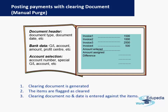Manual clearing — also called manual purge — involves posting payments with a clearing document. First, the clearing document is generated; second, the items are flagged as cleared; third, the clearing document number and date are entered against these items. Clearing is a very important part of the accounting team because when a sale is made and a payment is received, it is essential to know whether the customer account is completely cleared or if there is any outstanding balance, as the revenue of the company depends on this.